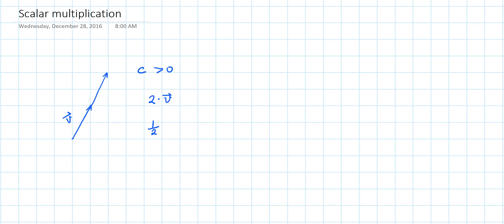And half of vector V, the scalar multiple of 1/2 and vector V, is this vector that's half as long as vector V and has the same direction.